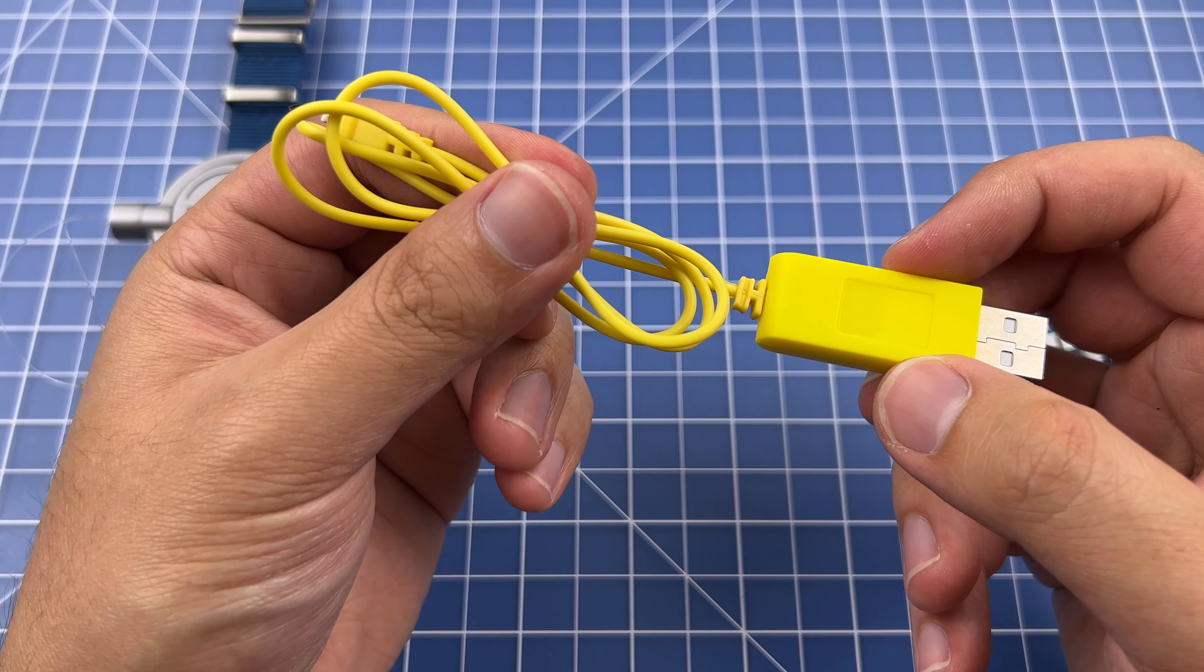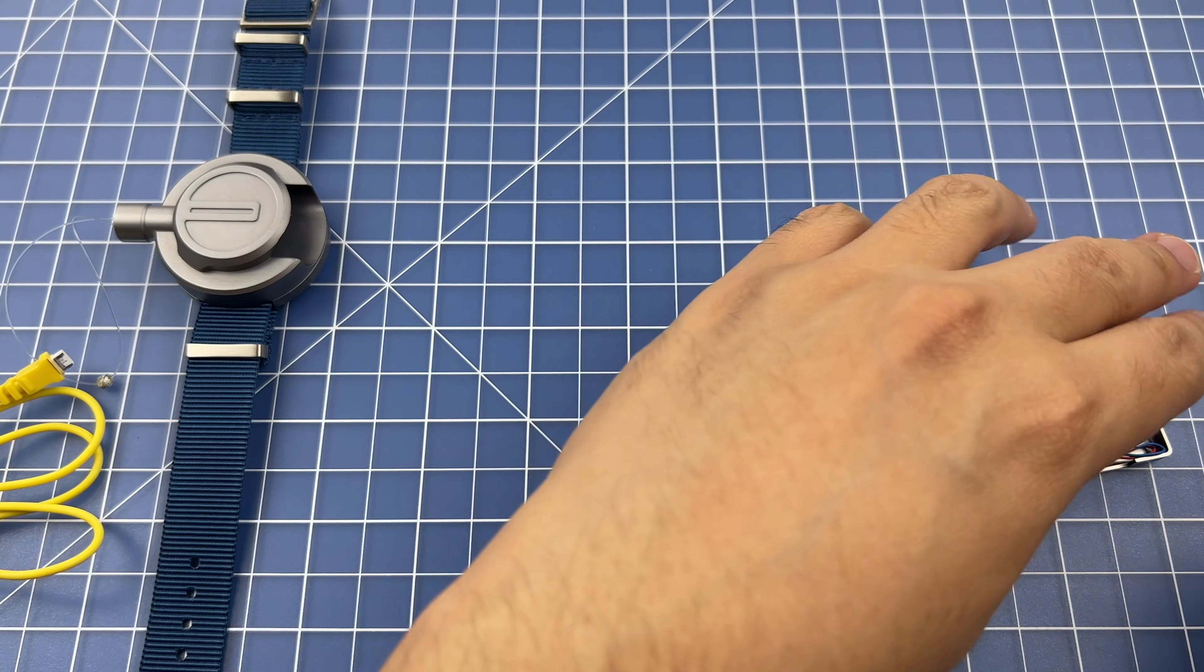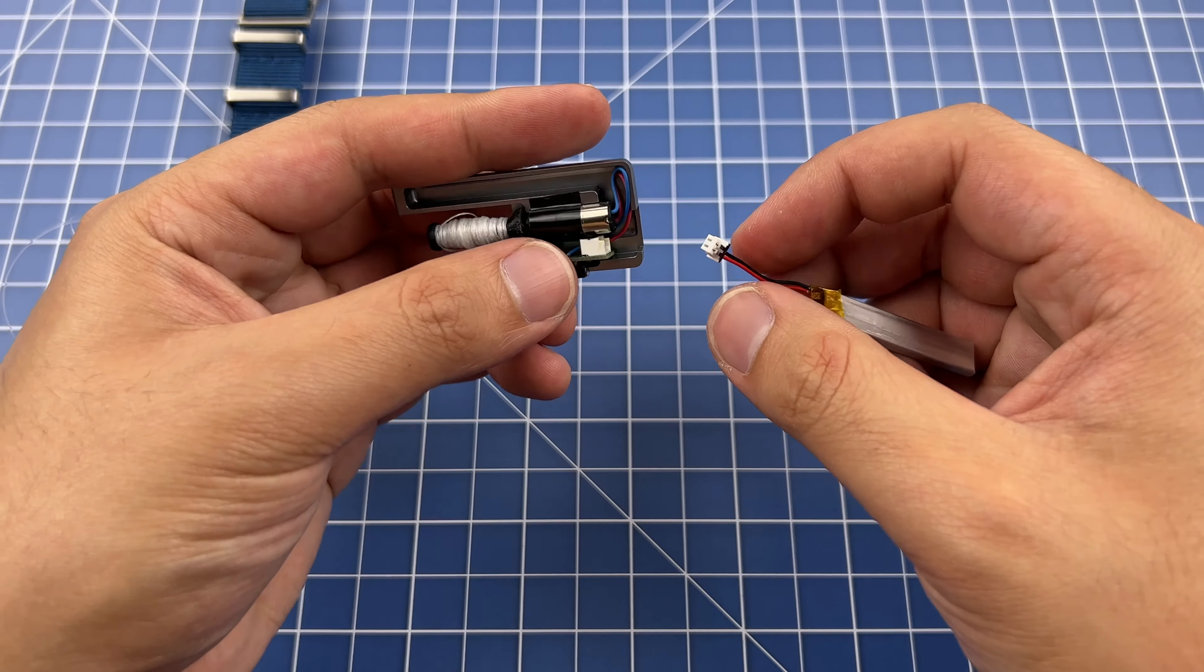When the battery is done charging, that red light will turn off. Once it's done charging, you can reinstall the battery inside the cartridge.